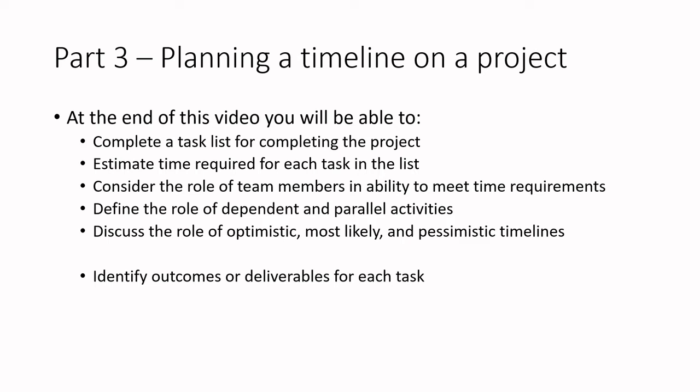At the end of this video you will be able to complete a task list for a project, estimate time required for each task, consider the role of different team members and their ability to meet time requirements, think about dependent and parallel activities, discuss optimistic, most likely, and pessimistic timelines, and identify outcomes or deliverables on each task. We'll walk through examples using the mochi ice cream project we were doing before.